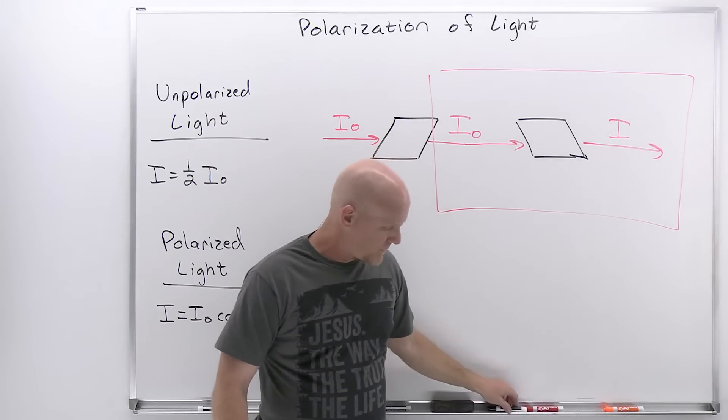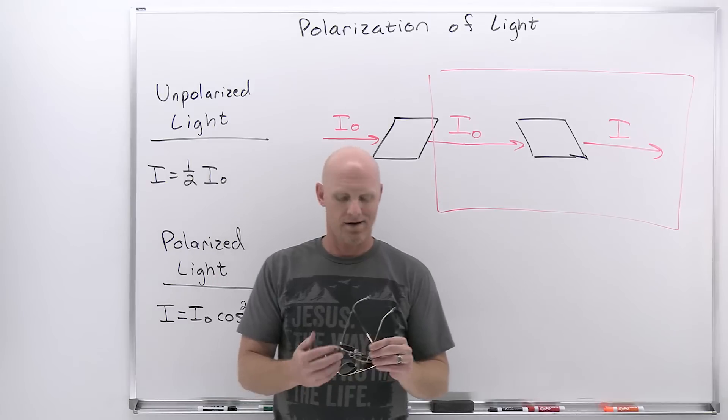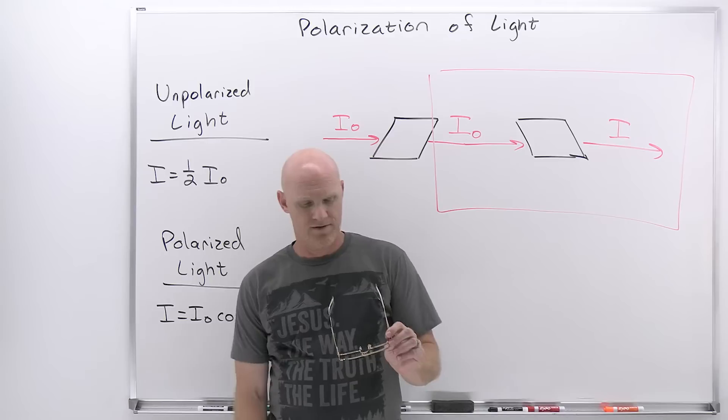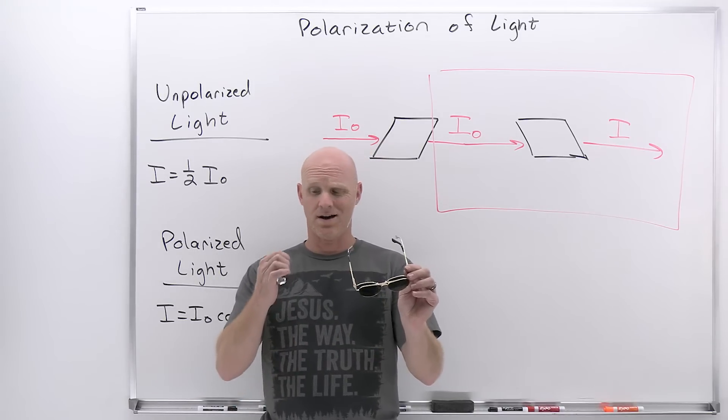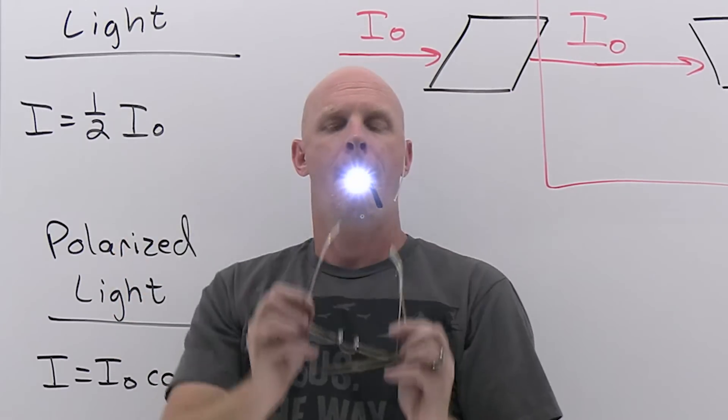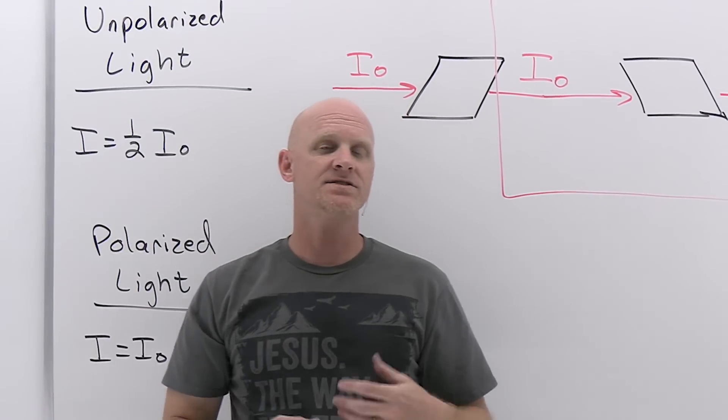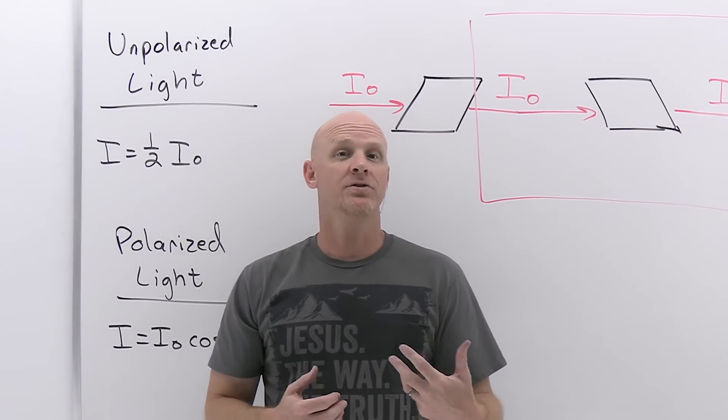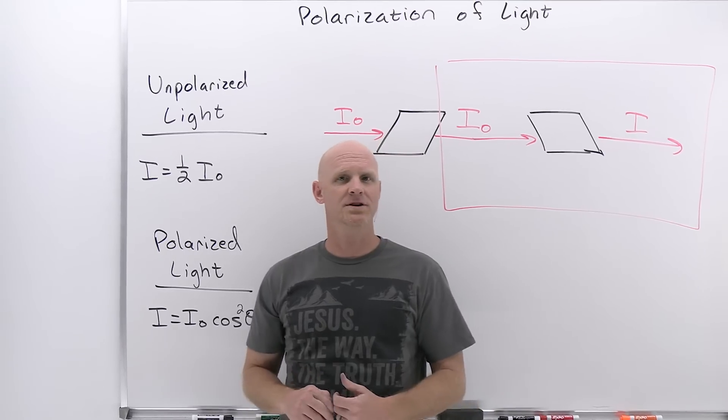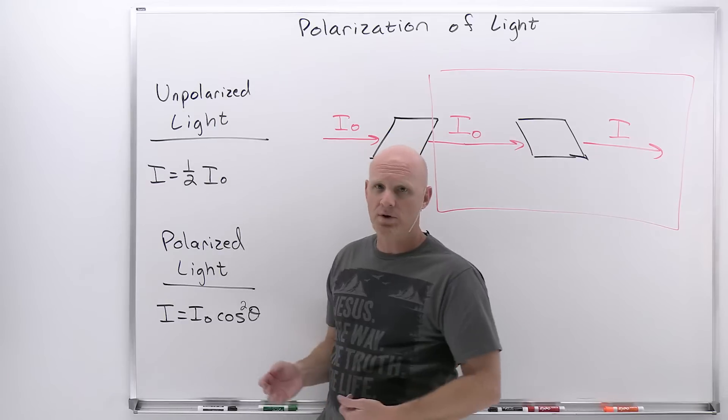My wife likes polarizing sunglasses, so she's got a couple of pairs here so we can demonstrate this. Now keep in mind, these are probably kind of cheap sunglasses, so how good a job they do, we'll see. What you saw is I rotated one of the pairs of sunglasses to be 90 degrees from the other pair, so the light got markedly dimmer. Now it didn't go to zero as the equation would predict here, but again they're probably cheap sunglasses. But it did get markedly dimmer as it should, according to our lovely equation here.